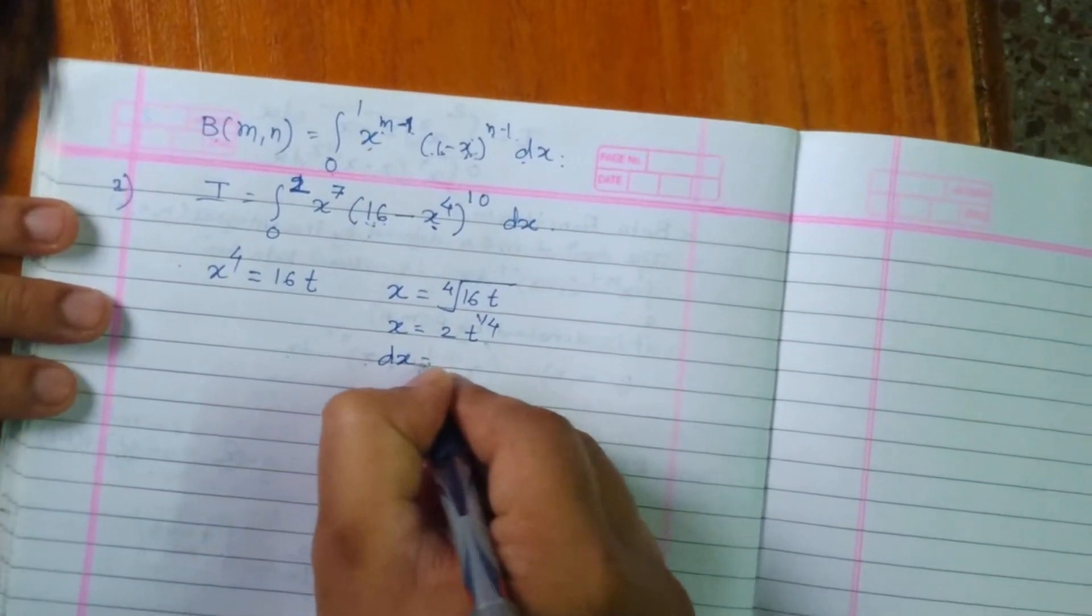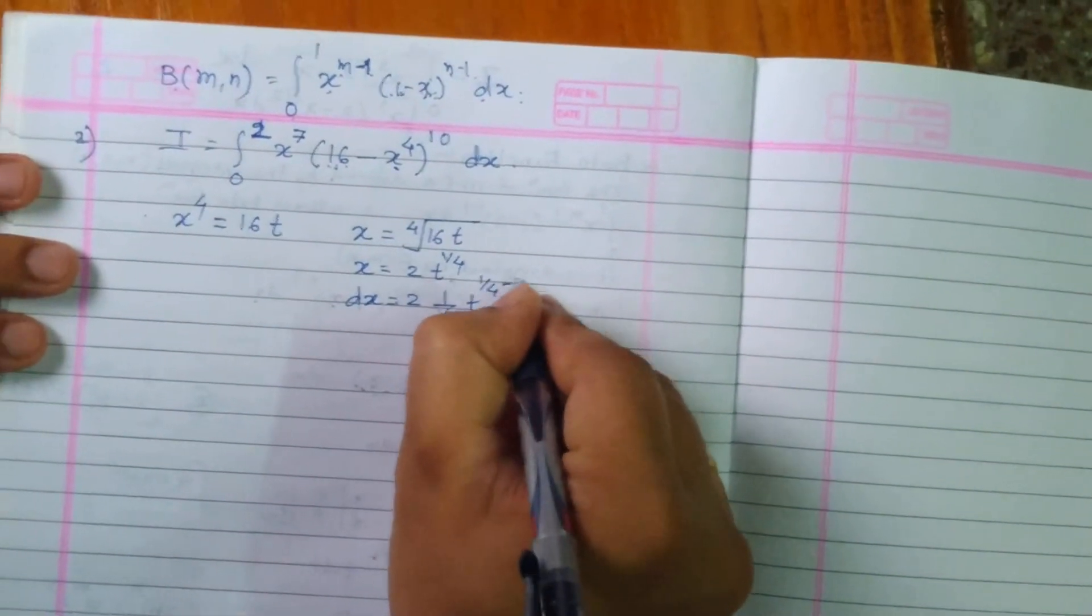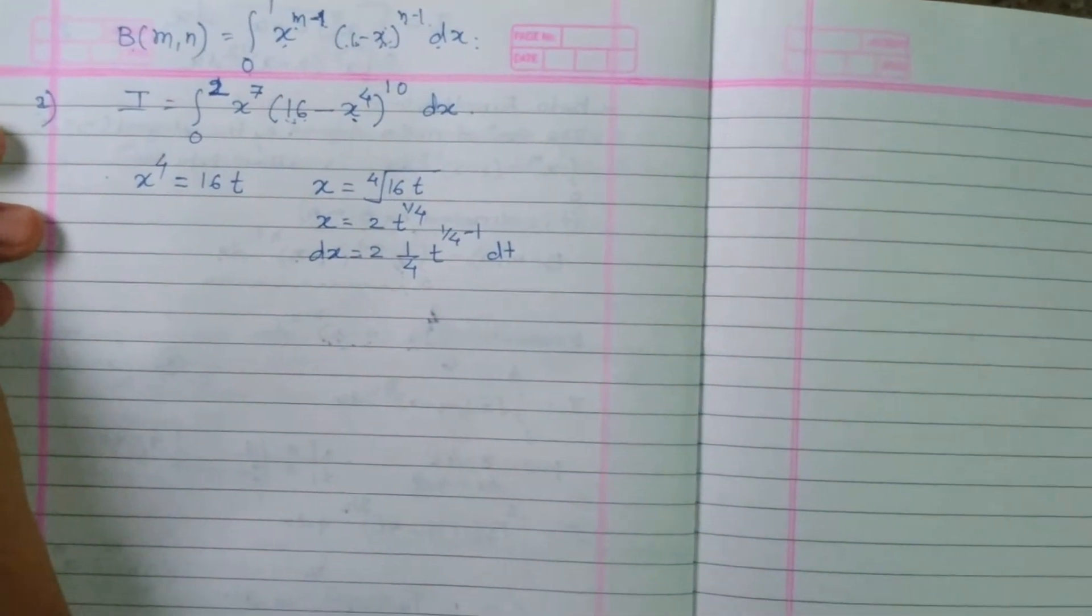Differentiating on both sides, we get dx equals 2 times 1 by 4 times t raised to 1 by 4 minus 1, times dt, with the help of chain rule.